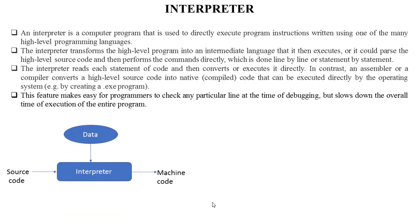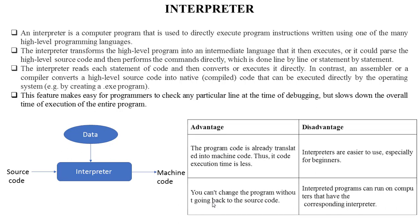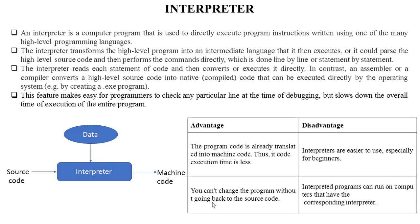Here is the diagram of the interpreter: the source program is given to the interpreter and the interpreter converts it into machine code. Regarding advantages and disadvantages of the interpreter: the program code is already translated into machine code, so code execution time is less. Interpreters are easier to use, especially for beginners. However, you cannot change the program without going back to the source code. Interpreted programs can run on computers that have the corresponding interpreter.